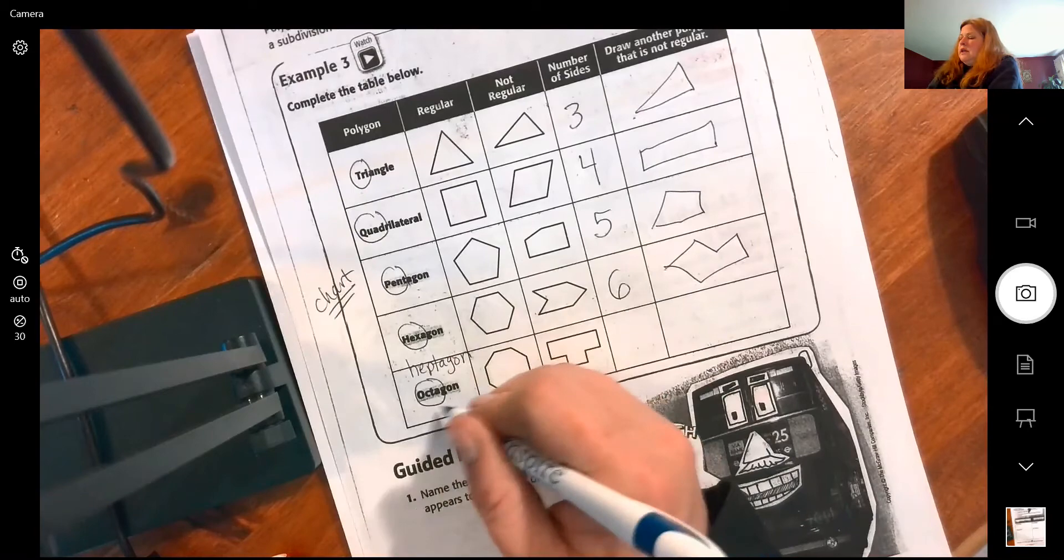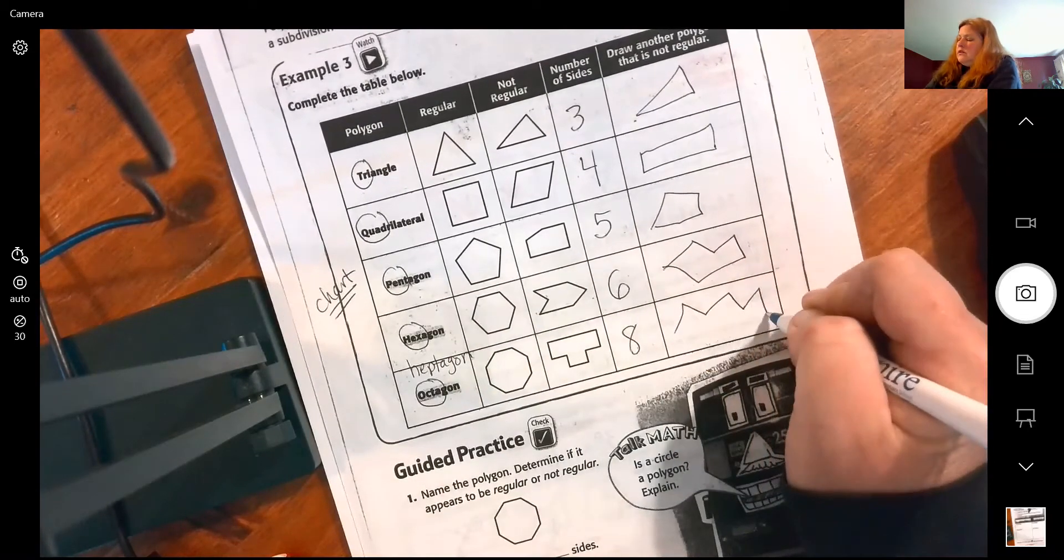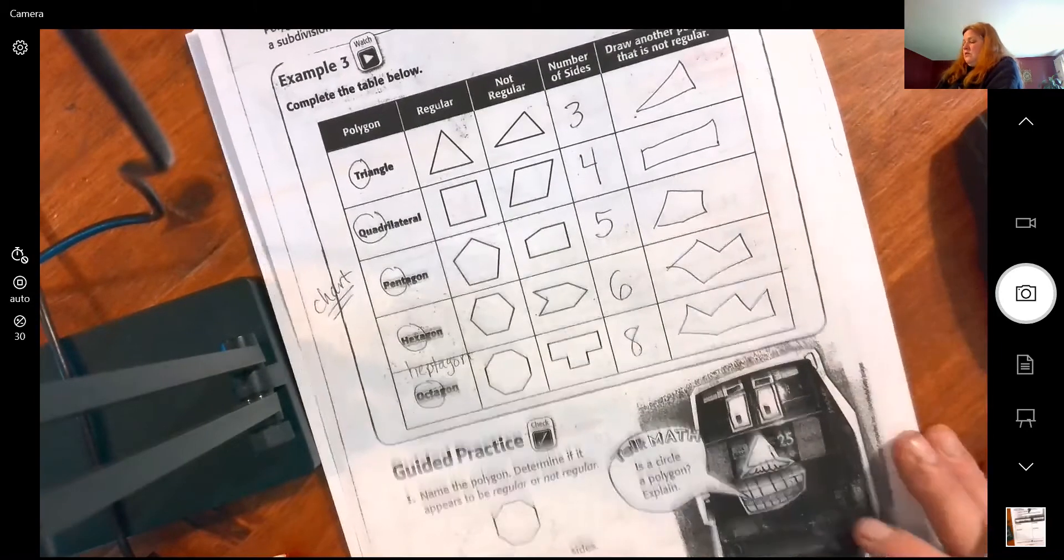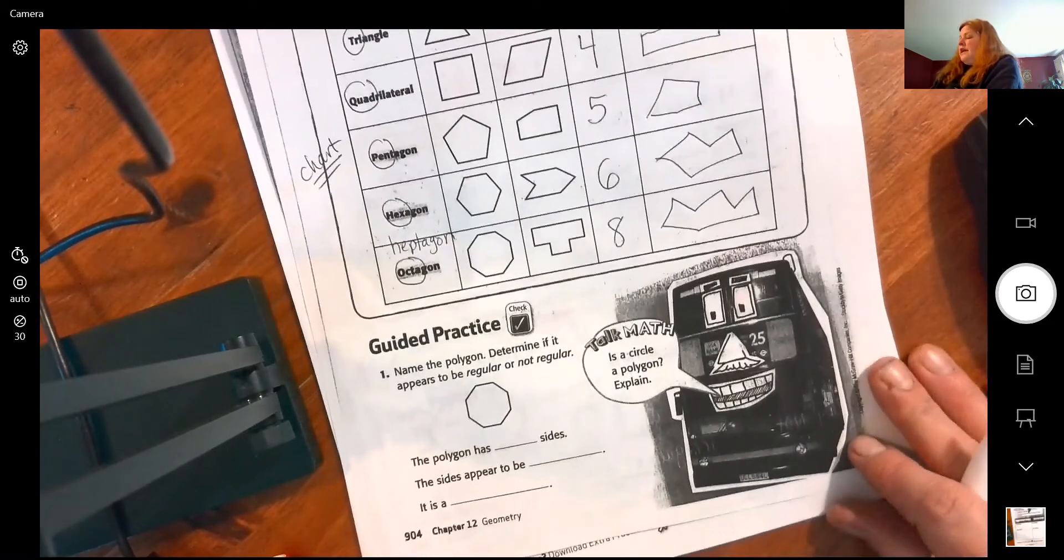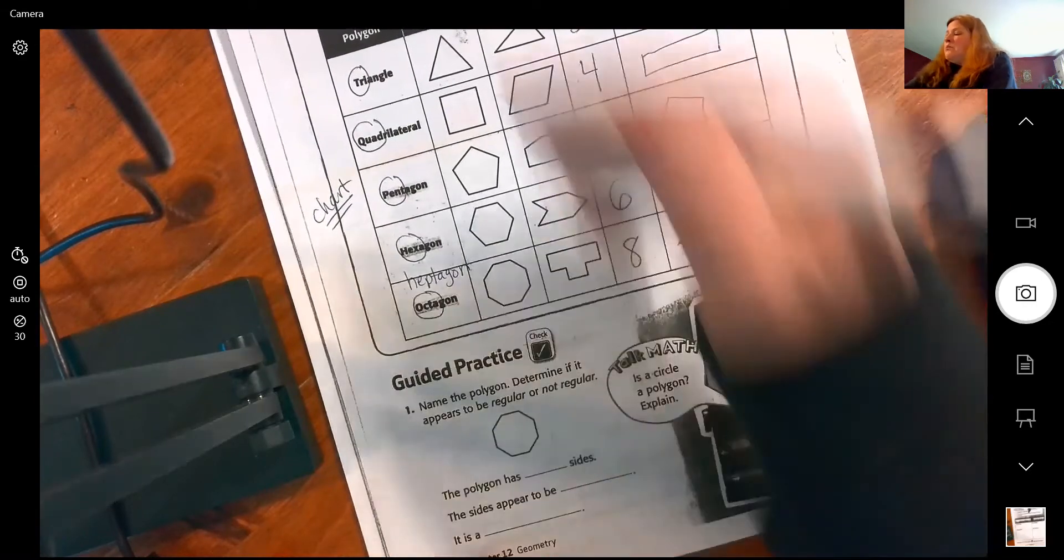Name the polygon. So first off, you name it by the number of sides and if it's regular or irregular.